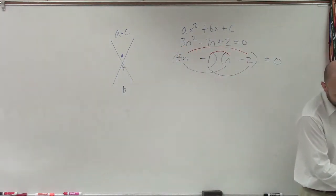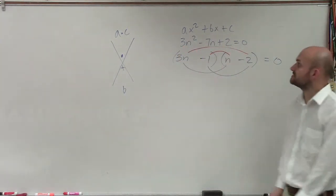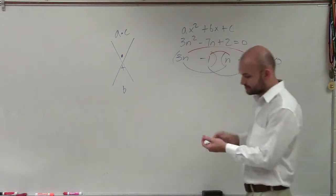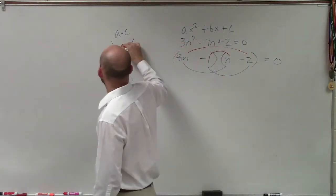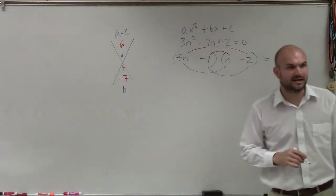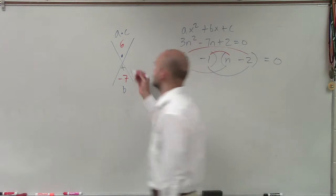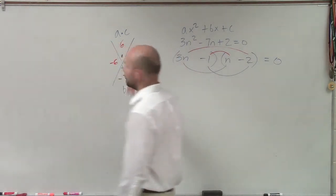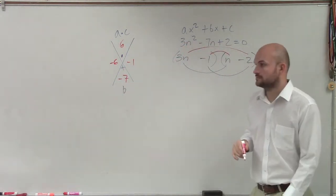So then we look at this and we say, alright, a times c is 3 times 2, which is 6. And then b is going to be negative 7. So you say what two numbers multiply to give me negative 6 but add to give me negative 7? Negative 6 and negative 1.